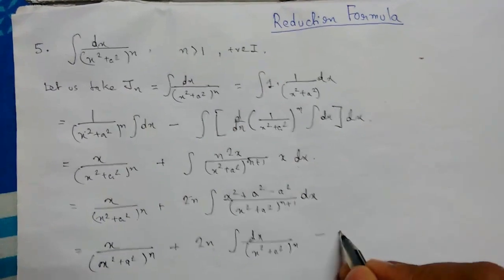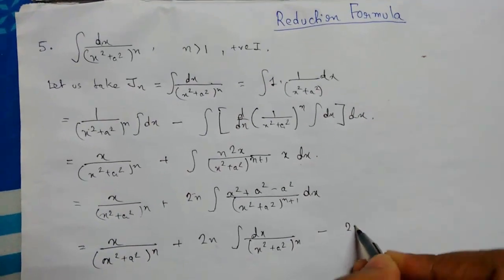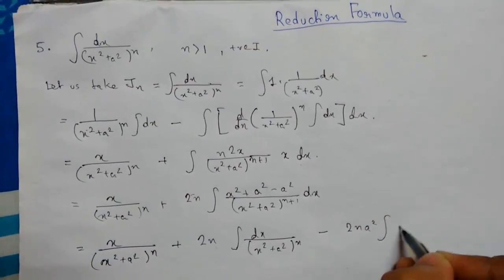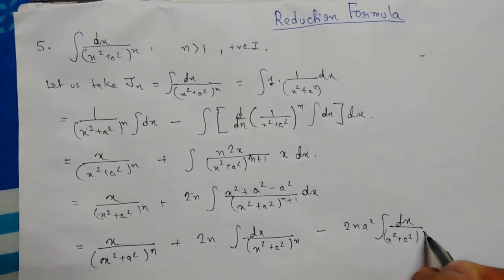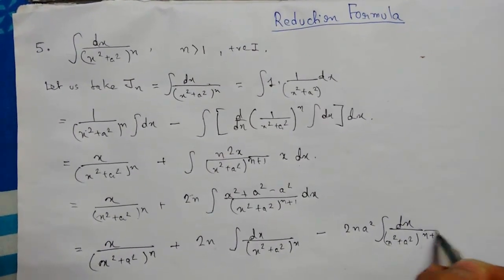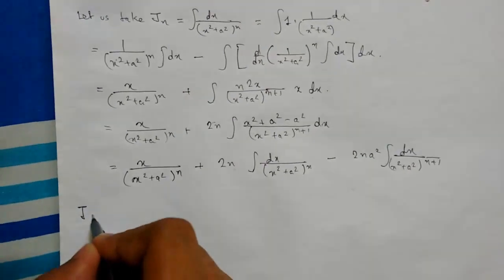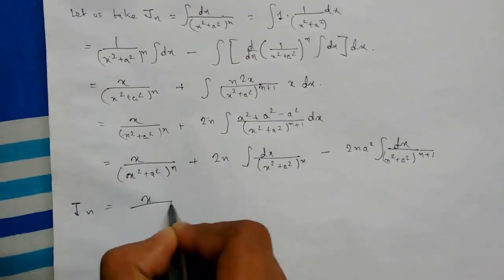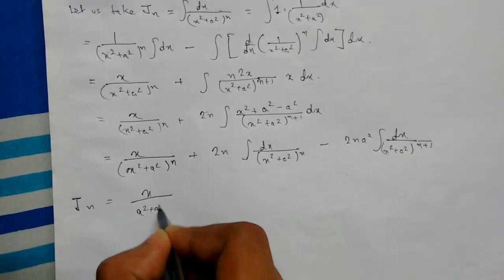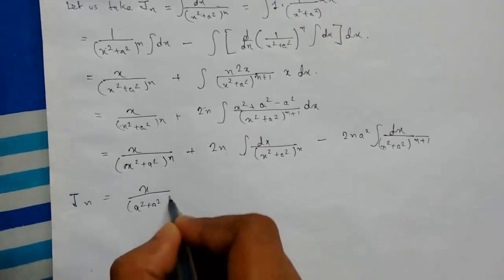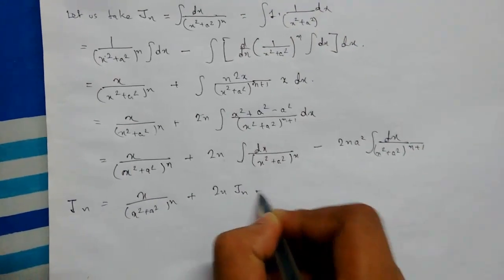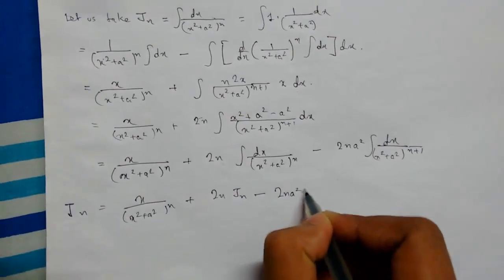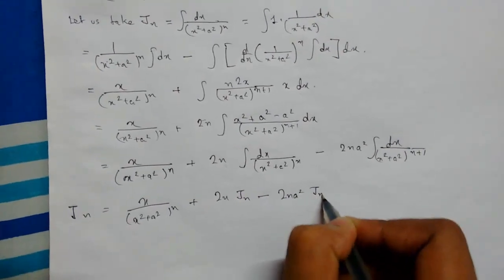Now this gives us the integration of dx upon (x² + a²)^(n+1). So we can see that J(n) will be equal to x upon (x² + a²)^n, minus 2n·J(n), minus 2n·a²·J(n+1).